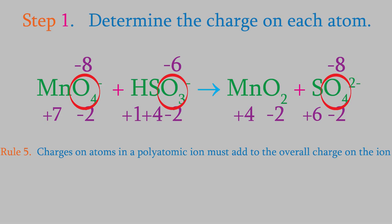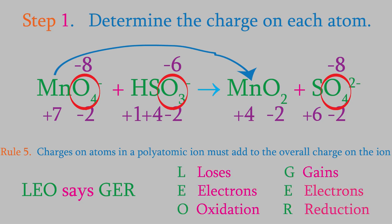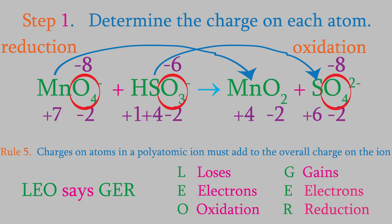Now that we've done that, we can see that the charges on the manganese and the sulfur change during the reaction. The manganese goes from having a charge of plus 7 to plus 4, which means it must gain electrons. As you might remember from last time, there's a memory aid that goes: Leo the lion says ger. The ger tells us that when an atom gains electrons, we say that it's being reduced. So the manganese is reduced. Meanwhile, the sulfur's charge changes from plus 4 to plus 6, so it's losing electrons. When an atom loses electrons, we say that it's being oxidized.